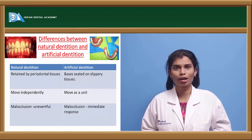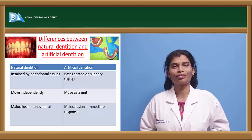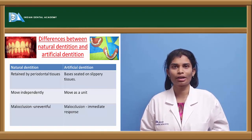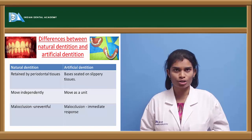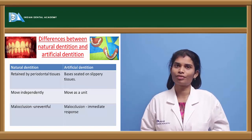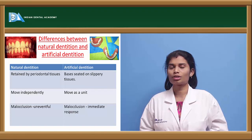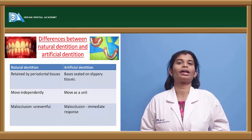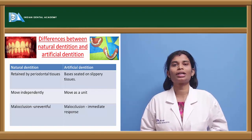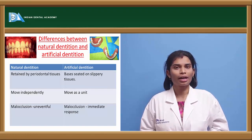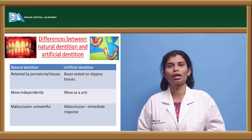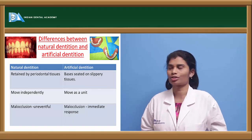When you consider malocclusion in dentures or artificial dentition, as it acts as a single unit, if there is any malocclusion, there are chances of dislodgement of the denture. So there should be no malocclusion in your dentures. Malocclusion in this sense means any occlusal prematurities can be considered as malocclusion in your artificial dentures.